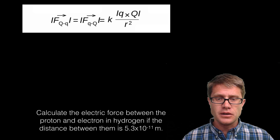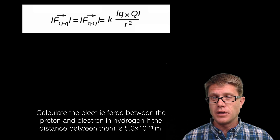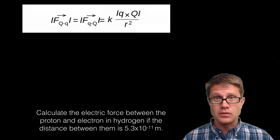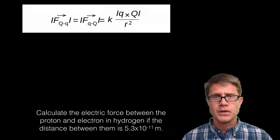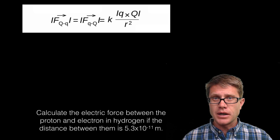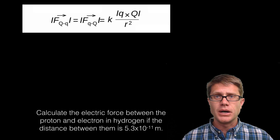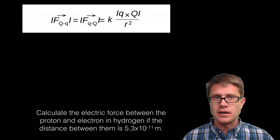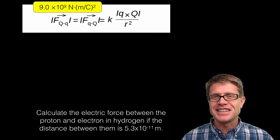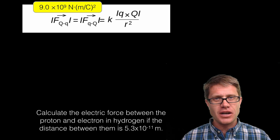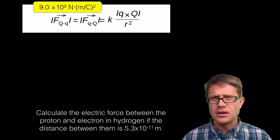Let's solve another one. Calculate the electric force between the proton and electron in hydrogen, which has one proton and one electron. The average distance between the proton and electron is 5.3 times 10 to the negative 11th meters. Pause the video and try to solve this one on your own, then come back. If not, here is how I would set it up: I have Coulomb's constant again, and now I calculate my charges.